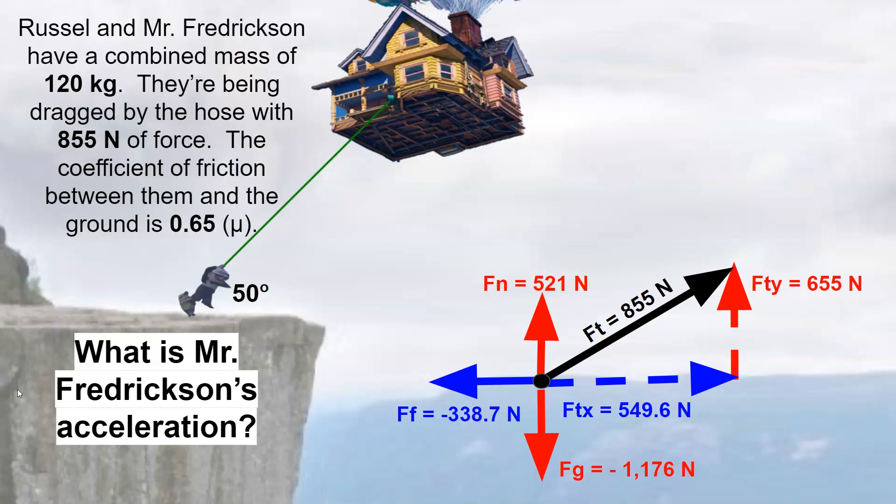Whether it's an angled problem or just a horizontal problem, if they were just being pulled straight instead of at an angle, from this point on it's the same. You found your net force by finding the imbalance in your horizontal forces. In that case, our net force was 210.9.